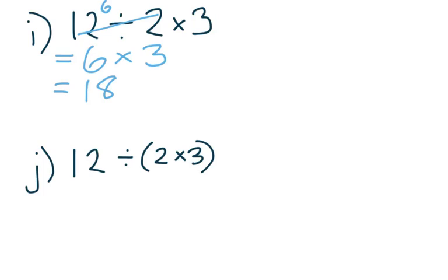However, when we do the second one, we can't just do 12 divided by 2 first because the bracket is around the multiplication. And what that means is we have to do that multiplication first. So this time we're going to do 2 times 3 is 6. So then our working out is actually 12 divided by 6 to give us 2.